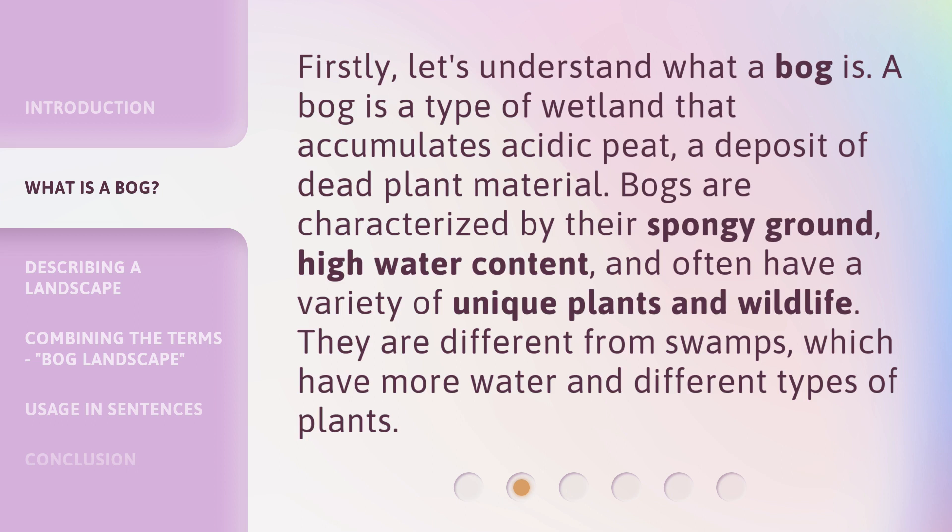Bogs are characterized by their spongy ground, high water content, and often have a variety of unique plants and wildlife. They are different from swamps, which have more water and different types of plants.